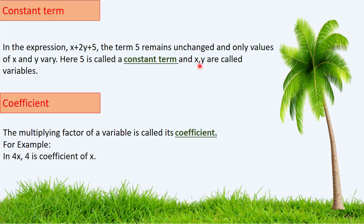x and y are called variables, as they are symbols for values that we don't know yet — usually a letter like x or y. The word 'vary' means changed: the values of x and y can vary, meaning you may put different values of x and y into the expression. That is why x and y are called variables.